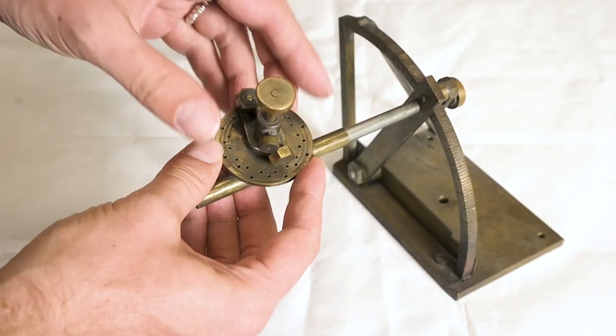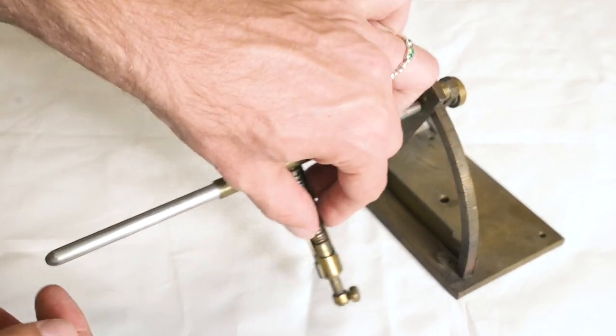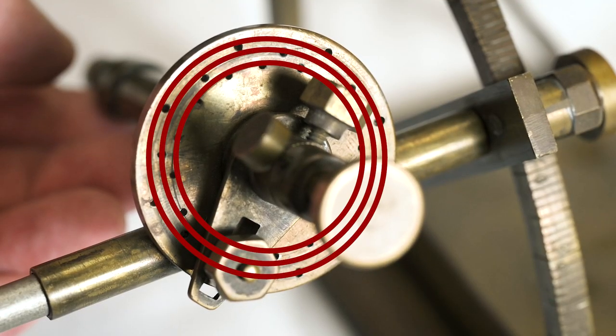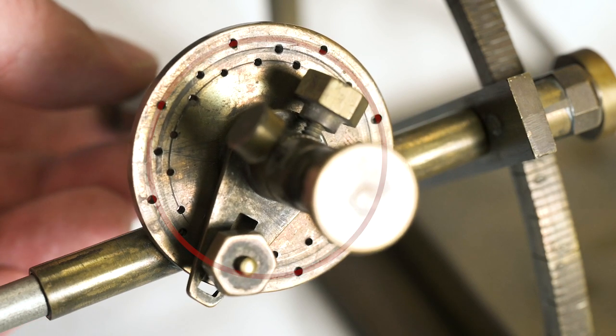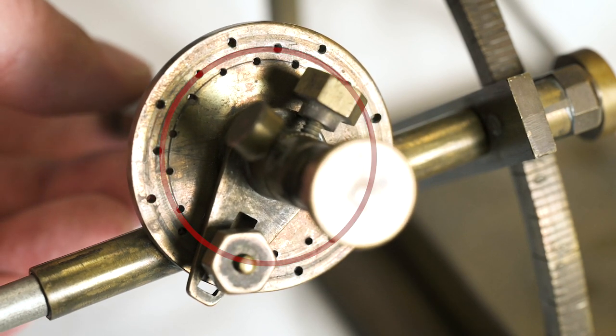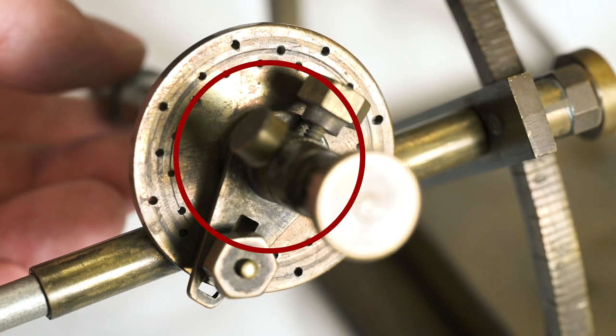Here we can see three rings of holes. The outside ring cuts eight star facets, the middle ring cuts eight main facets, and the inner ring cuts 16 break facets.